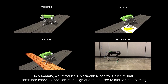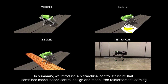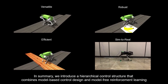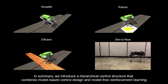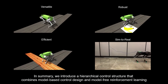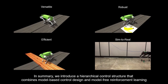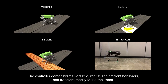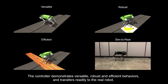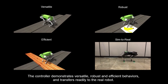In summary, we introduce a hierarchical control structure that combines model-based control design and model-free reinforcement learning. The controller demonstrates versatile, robust, and efficient behaviors, and transfers readily to the real robot.